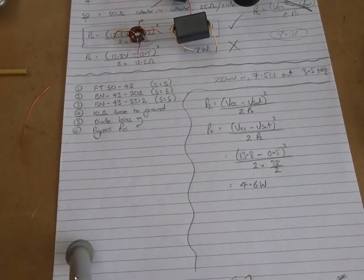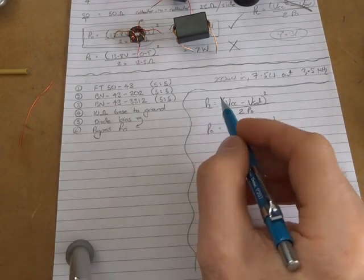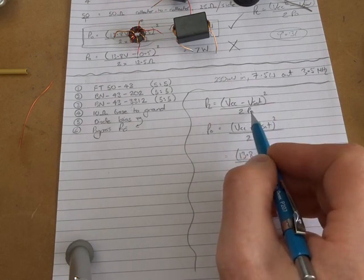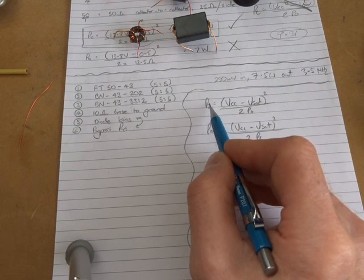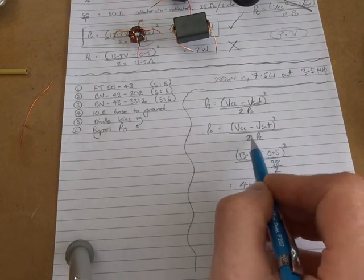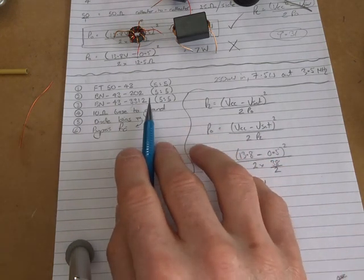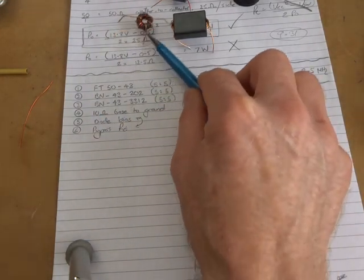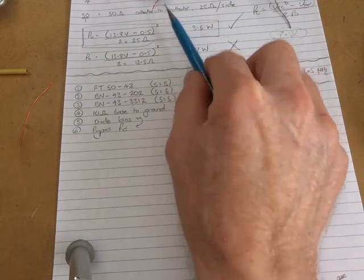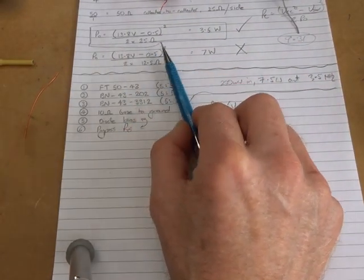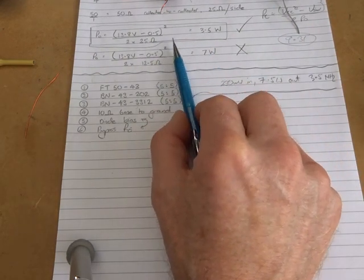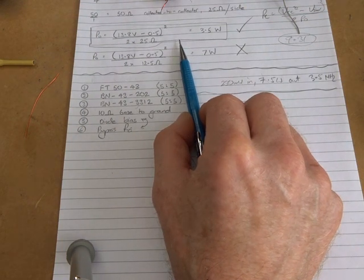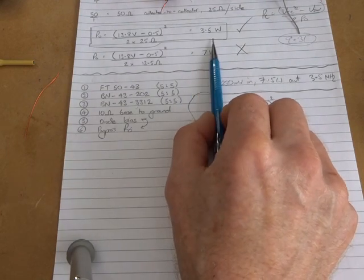I just had a bit of a play around with the load formula. RL, which is our load formula, is typically Vcc minus Vsat squared over 2 times power out. If we make power out the subject, then we can solve for power out given an RL. If we go back from our conclusion this morning, the resistance to use for each side of a push-pull amplifier using parallel devices would appear to be the collector-to-collector impedance divided by 2.